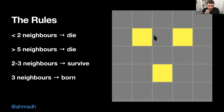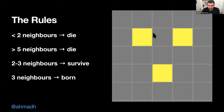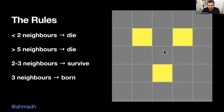If you have more than three live neighbors you die because of overcrowding. If you have two or three neighbors, you survive. If you are a dead cell with exactly three neighbors, you become alive. So a cell can either die, be born, or stay in its current state — those are the only four rules you need.